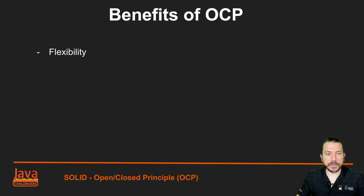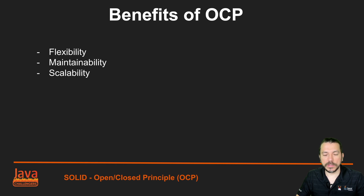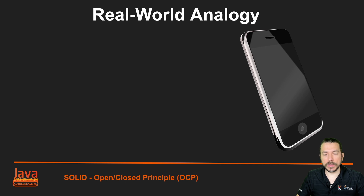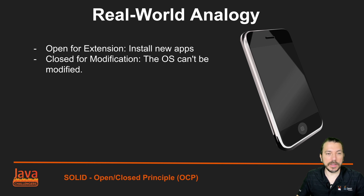Let's see the benefits of OCP. The first one is flexibility, because the system can grow with minimal changes in the existing code. We also have maintainability because we're going to have fewer changes in the code, which means fewer bugs as well. We can easily add new features without impacting existing code. Your phone is a good example of OCP — it's open to install new apps, but its operating system can't be changed.